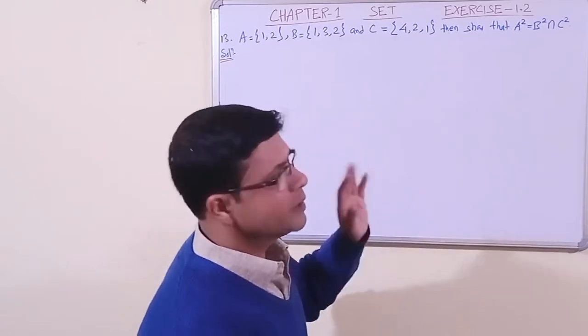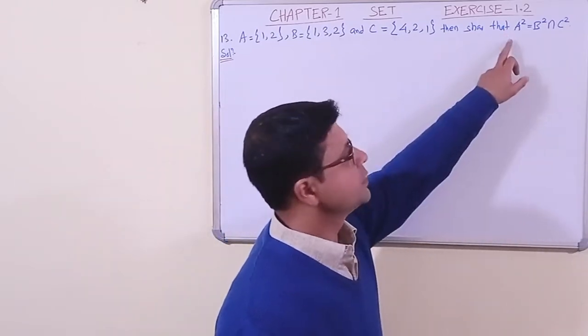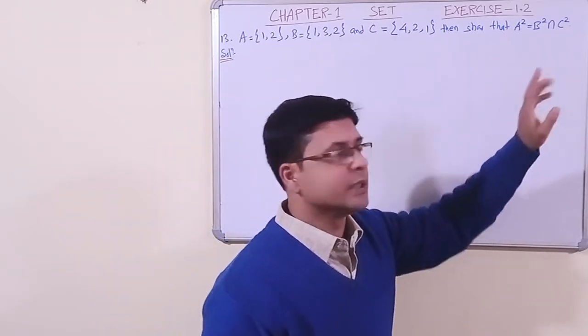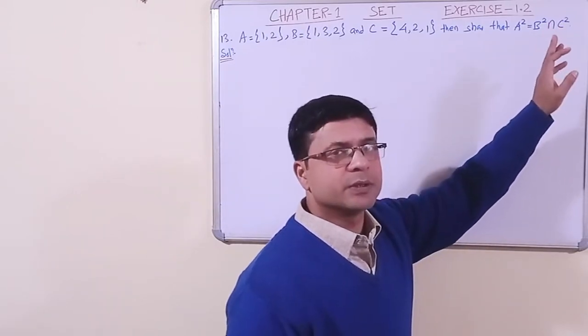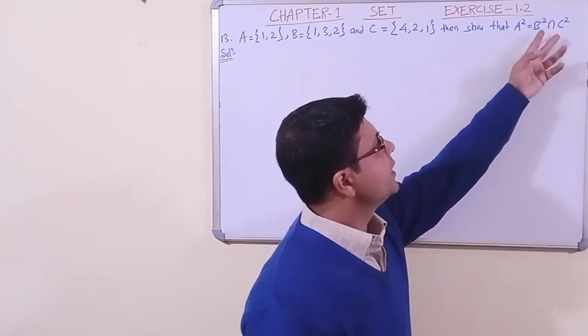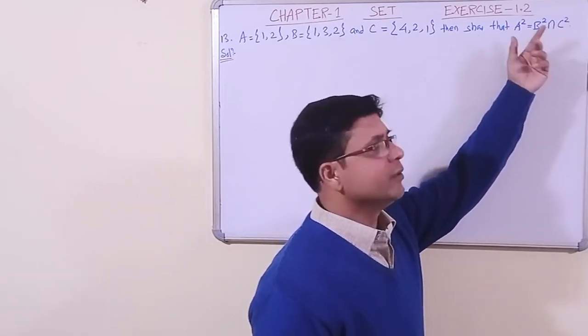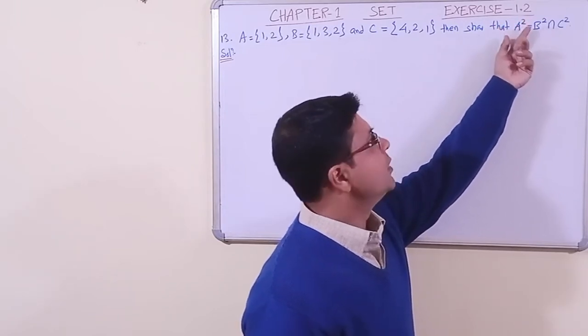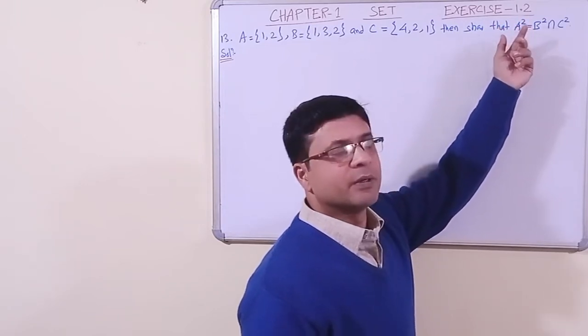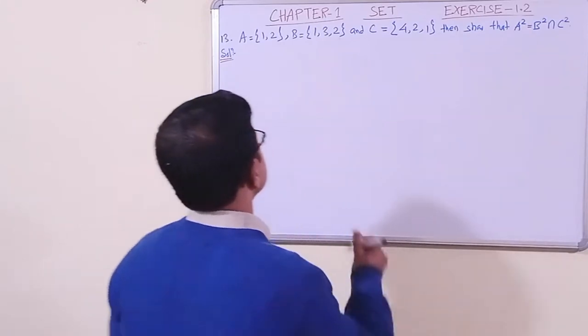What we'll do? The concept is that we shall find A square, what is A square? A cross A. Then B square, B cross B. Then C square, C cross C. Then we'll find their intersection and we'll check whether that set will be equal to the set of A square or not.